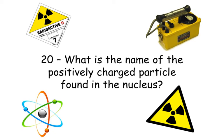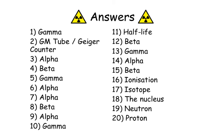Here are your answers. Number 1: Gamma. Number 2: GM tube or Geiger counter. Number 3: Alpha. Number 4: Beta. Number 5: Gamma. Number 6: Alpha. Number 7: Alpha.